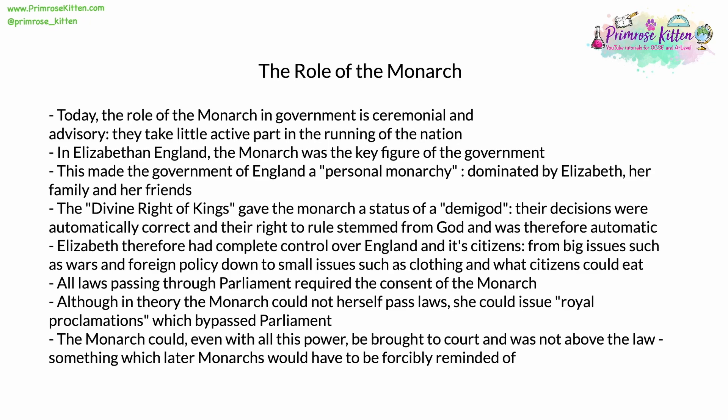Elizabeth therefore had complete control over England and its citizens, from big issues such as wars and foreign policy, right down to the minutiae of everyday life, such as what clothes people could wear and what they were allowed to eat. All laws that passed through parliament required the consent of the monarch. In Elizabeth's day that was actually required and not automatically guaranteed. In theory, the monarch could not herself pass laws — this required the consent of parliament — but she could issue what were known as royal proclamations, which completely bypassed the need for parliament in its entirety.